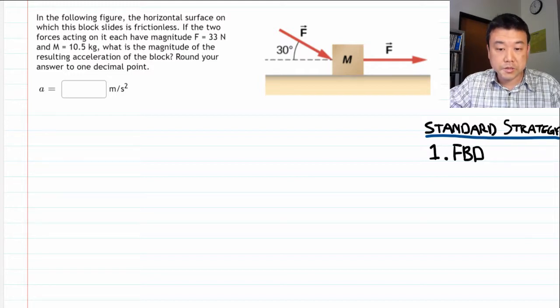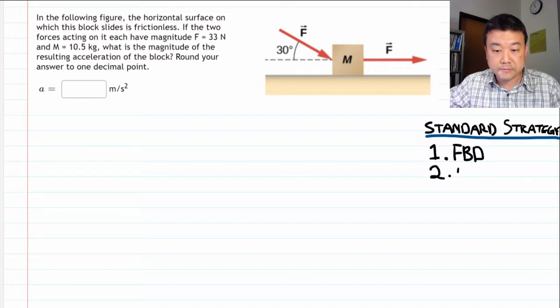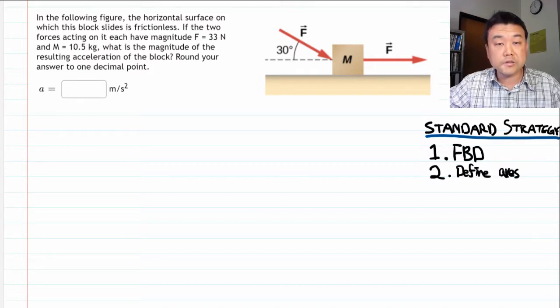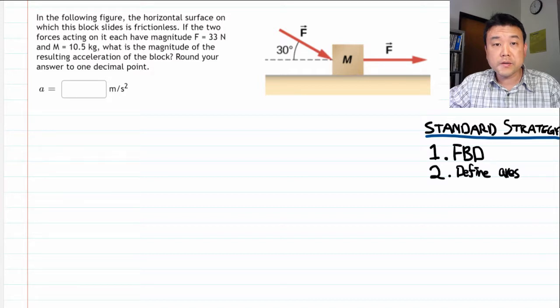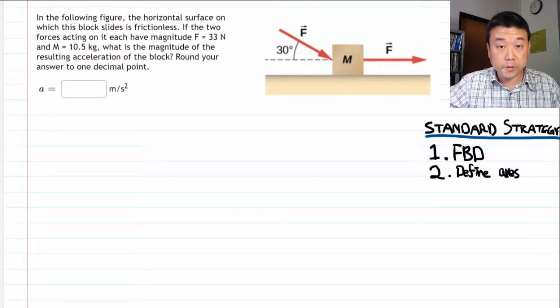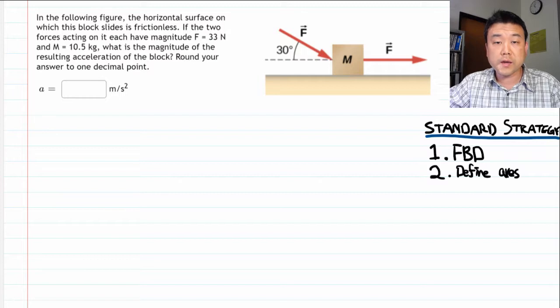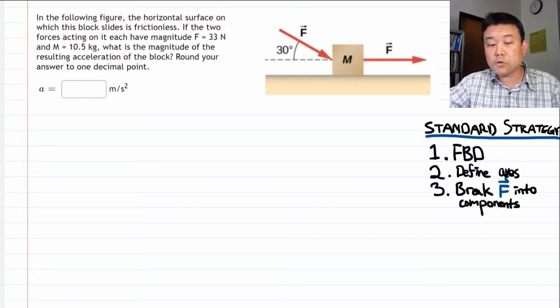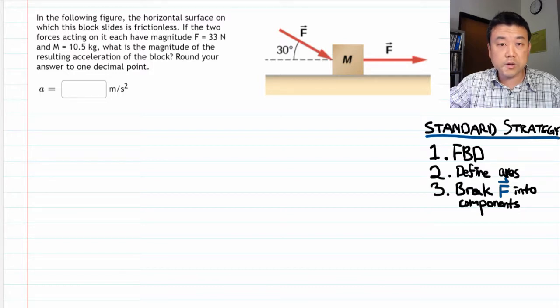And part of that systematic approach is we define a coordinate axis. And there are some guidelines to follow in how we draw that axis. We'll go over that. And once you have the coordinate axis defined, those axis were defined for a purpose. It's so that we can break forces down into components.